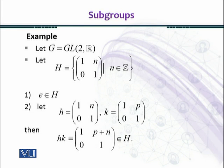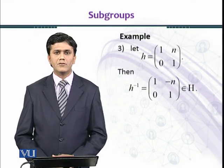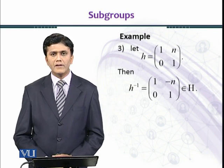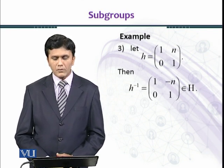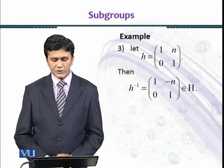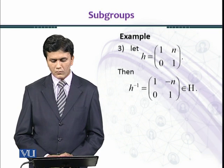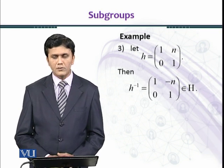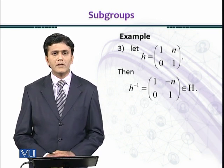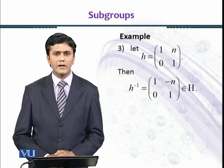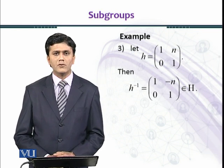Now we shall prove that inverse of every element exists in H. Let h = [[1, n], [0, 1]] where n is an integer, and we take h^(-1) = [[1, -n], [0, 1]]. Since -n is also an integer, h^(-1) belongs to H.